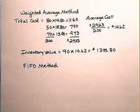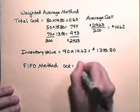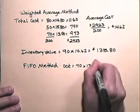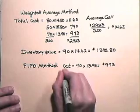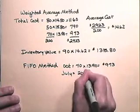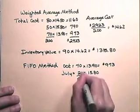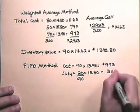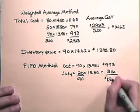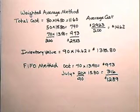Those remaining in inventory are those purchased in October, which are 70 units at $13.90, which is $973. And those purchased in July, which is 20 units at $15.80, giving us our 90 units. 20 times $15.80 is $316, for a total of $1,289. So by the FIFO method, the inventory value is $1,289.